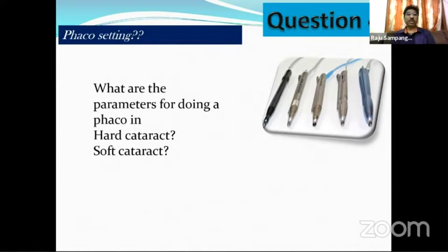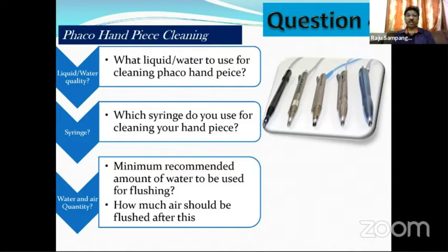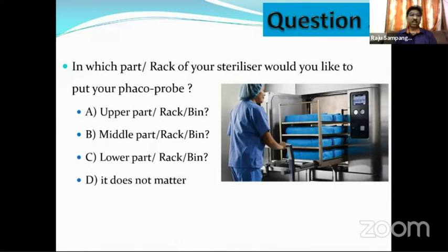The next question is probably simple for you all — what are the parameters of a Bowie-Dick test? What is the liquid or water that should be used in your faco handpieces? Which syringe do you use? What is the minimum amount of water to be used in the tank, and how much air do you flush from the faco? In which part or rack of your sterilizer do you place your faco probe — upper, middle, lower, or does it not matter?